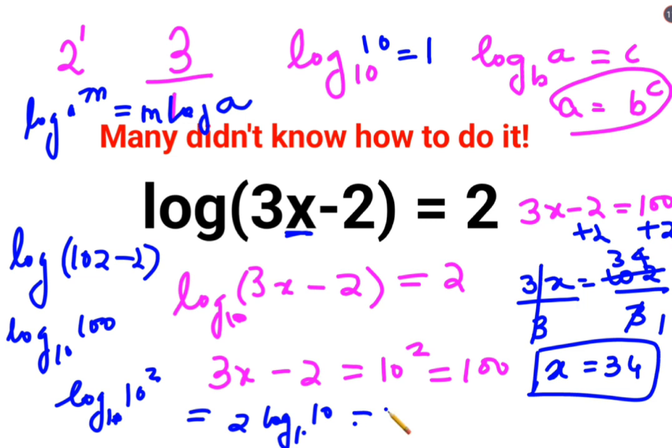And log of any number to the same base is always 1. So this comes out to be 2 times 1, which equals 2, which is your RHS. So, here we can say that the value of x is 34.